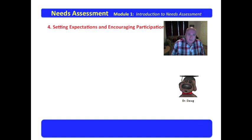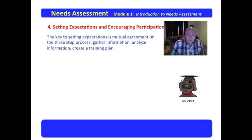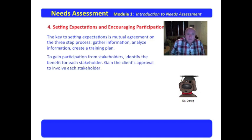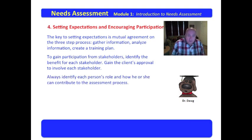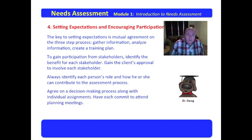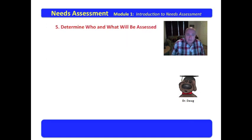You will also need to set expectations and encourage participation. The key is gaining mutual agreement on the three-step process. To gain participation from stakeholders, always identify the benefit for each stakeholder, gain the client's approval to involve each stakeholder, identify each person's role and how they can contribute to the assessment process, agree on the decision-making process along with individual assignments, and have each person commit to attend planned meetings.